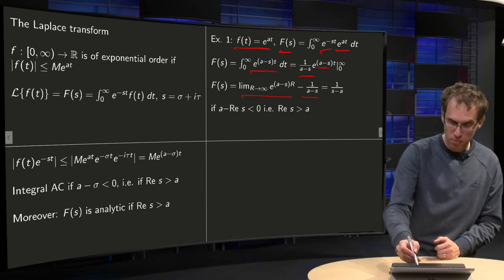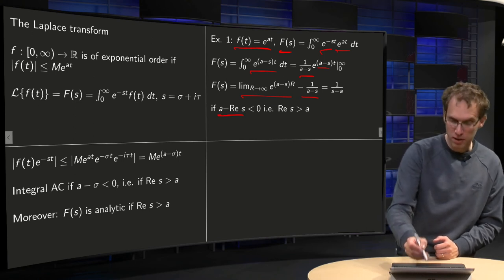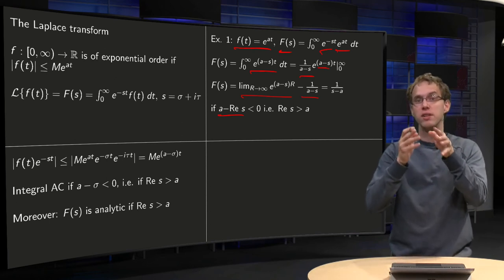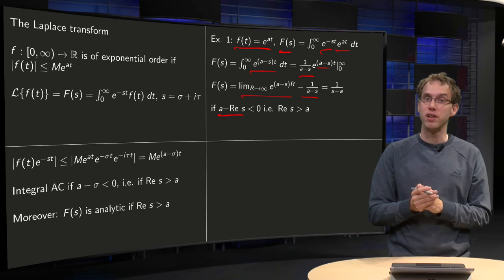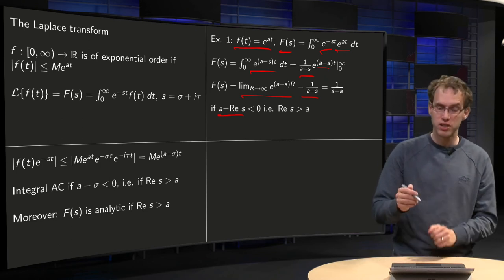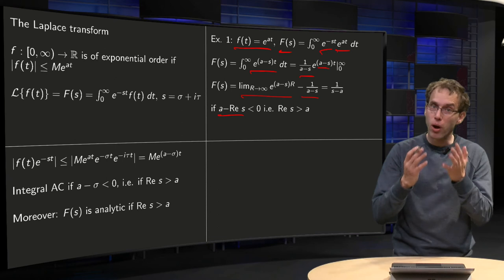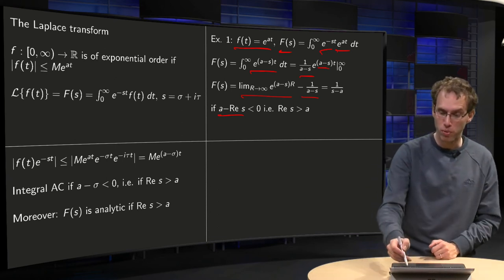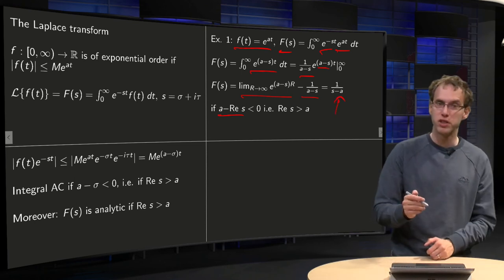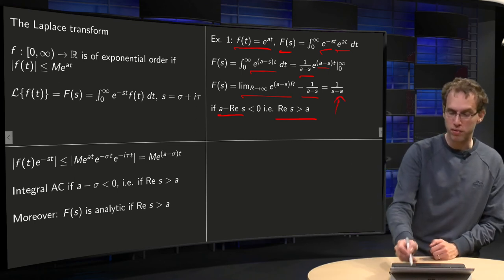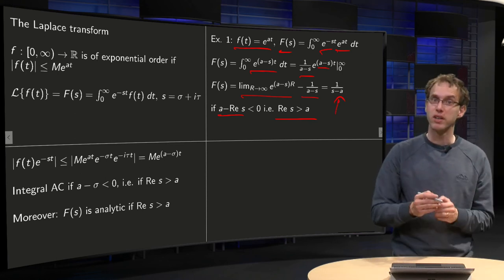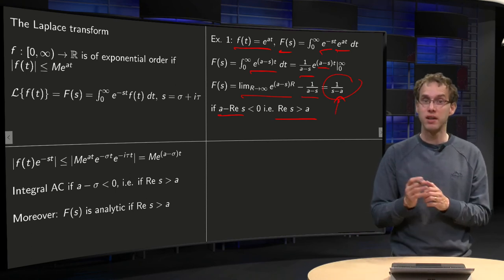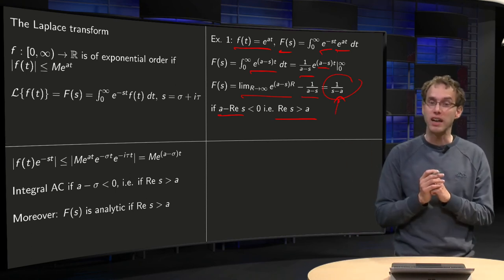And this limit equals 0, provided this a minus your real part of s is smaller than 0. Because then you have e^(-r), for r going to infinity, goes to 0. So in that case, your upper limit here integral vanishes, integral converges to 1/(s-a). So what does this condition mean? Well that the real part of s has to be bigger than a. So you find your capital F(s), an analytic function, 1/(s-a). And indeed this function is analytic, provided you are to the right of your a.